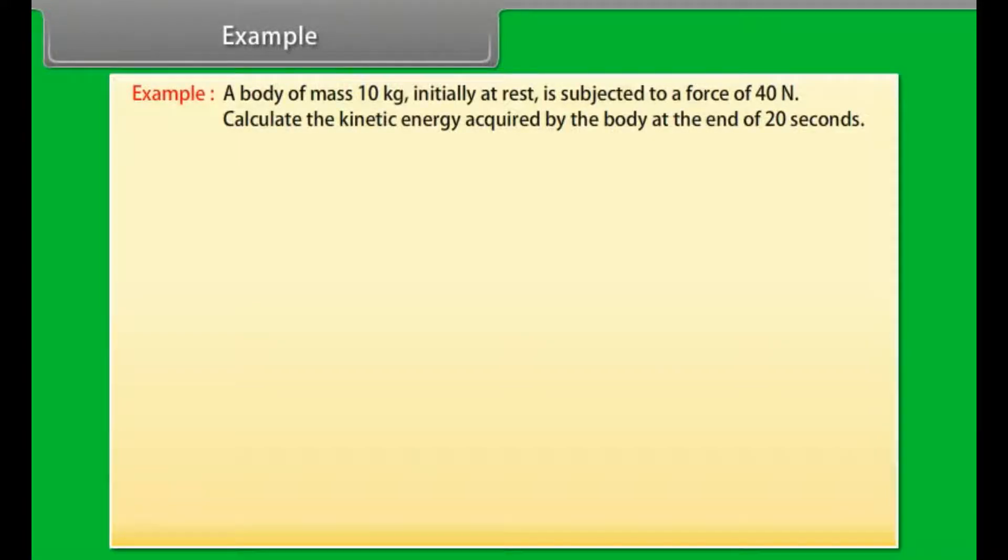Example. Let's take an example of kinetic energy. A body of mass 10 kg initially at rest is subjected to a force of 40 newton. Calculate the kinetic energy acquired by the body at the end of 20 seconds. Let's see the solution. Given values are m = 10 kg, u = 0, F = 40 newton, t = 20 seconds.